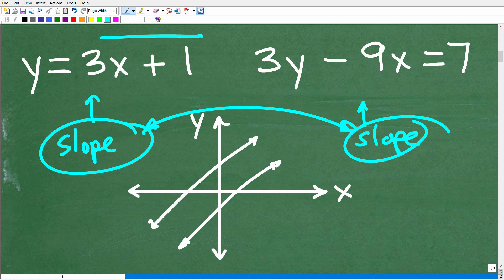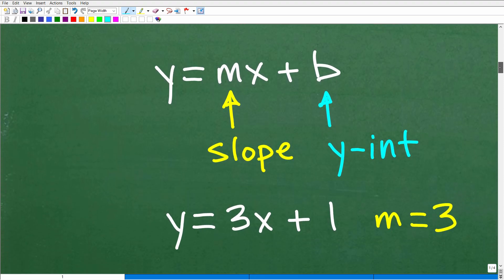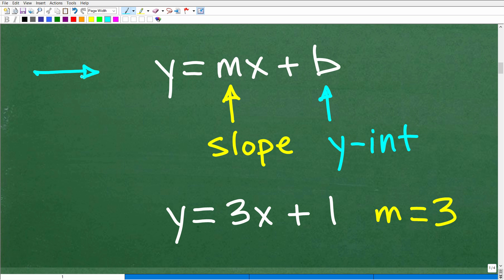So let's go ahead and start off with this line here, this linear equation here, because determining the slope of this linear equation is so easy. What you want to be thinking about is this form of a linear equation, y equals mx plus b. We call this the slope intercept form. It's probably the most common form of a line or linear equation.